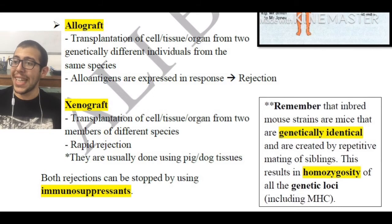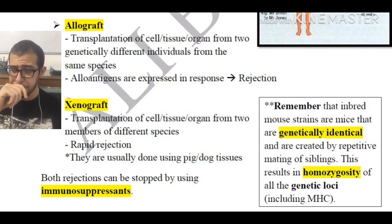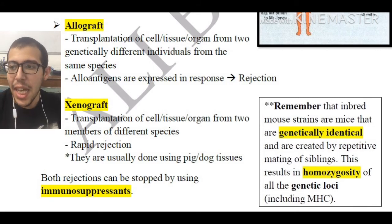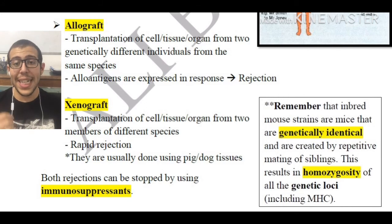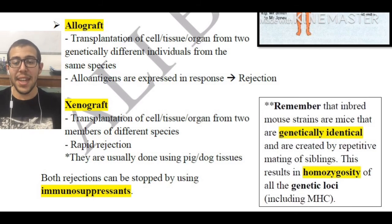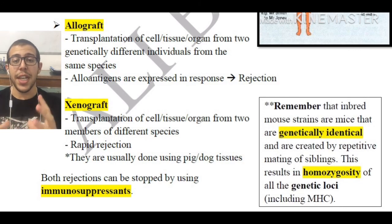Inbred mouse strains are mice that are genetically identical, created by repetitive matings of siblings. This results in homozygosity of the genetic loci — essentially we're talking about two genetically identical organisms. In this case we have mice, and obviously it is going to be much easier to repeatedly mate mice more commonly than other species.